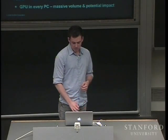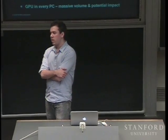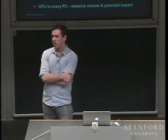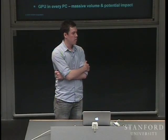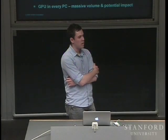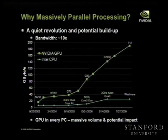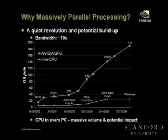A related graph we can also look at is bandwidth — basically how fast the CPU or GPU can read and write data from memory. Higher is better here, and the graphs are similar, with the gap being somewhere on the order of 10x. GPU architectures are designed to have much higher bandwidth capabilities than CPU architectures, and these demands are basically driven by PC games, since the application demands much higher bandwidth.